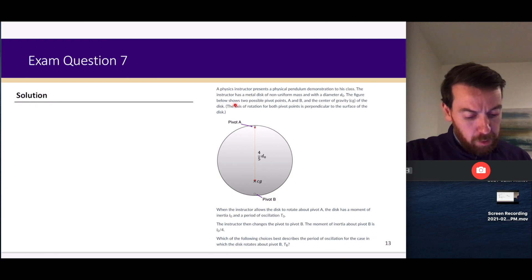It has a diameter d₀. The figure below shows two possible pivot points at opposite sides of the disc, A and B, and the center of gravity (CG) of the disc, which is four-fifths of d₀ from pivot point A, which means it's one-fifth of d₀ from pivot point B. That will be important.